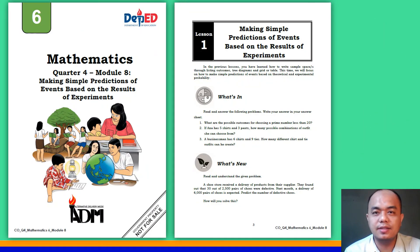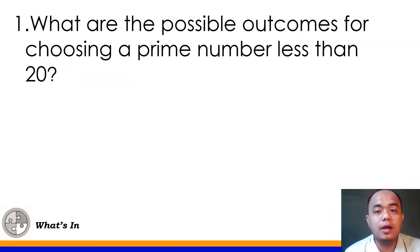This time, let's discuss the what's in part of your module. Number 1. What are the possible outcomes for choosing a prime number less than 20? Now, para masagutan mo tong number 1, kinakailangang alamin mo muna natin kung ano ang ibig sabihin ng prime numbers. What do we mean by prime numbers? Can you still remember?